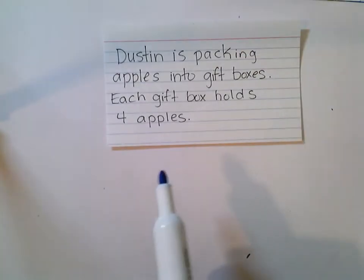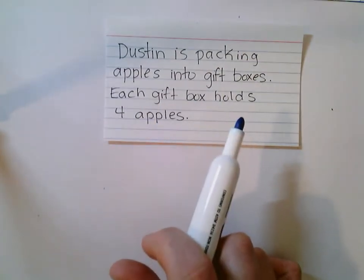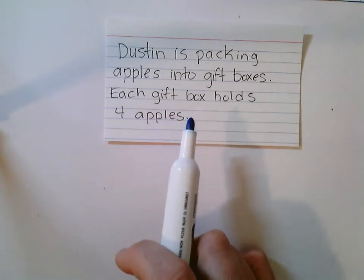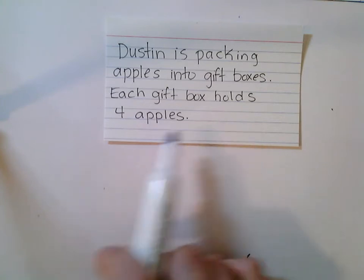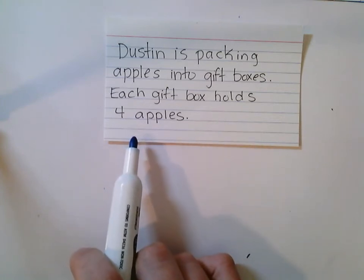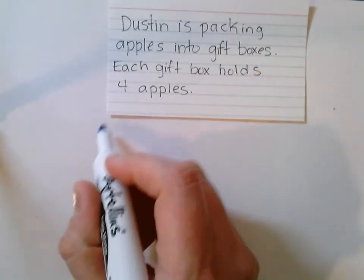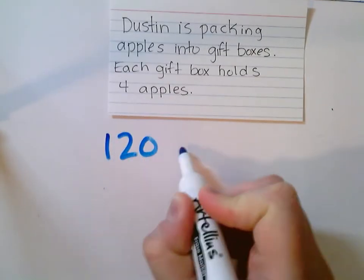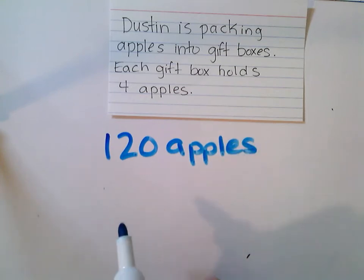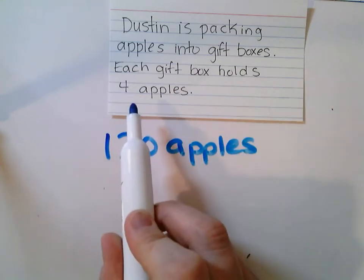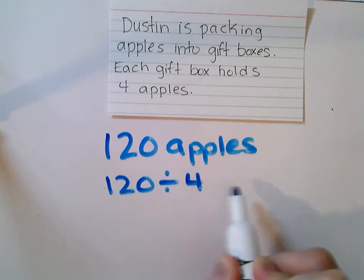Our first problem is going to use some of this information. Dustin is packing apples into gift boxes. Each gift box holds four apples. So we're making gift boxes, and each of them are holding four apples. What if Dustin had 120 apples and he's going to be dividing them into gift boxes that hold only four apples? So his division problem would be 120 divided by four.